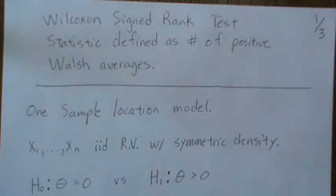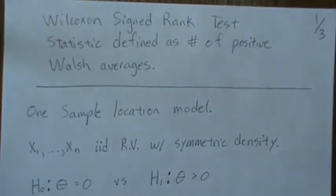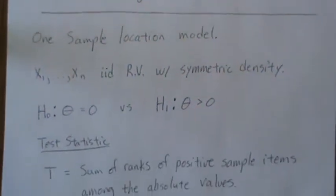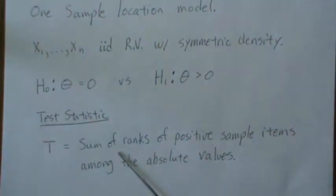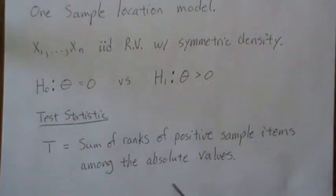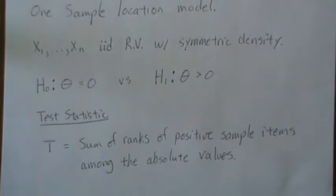The hypothesis that we test is the median is zero versus that it's greater than zero. The test statistic is the sum of the ranks of positive sampled items among the absolute values, and so let's explain what that is.